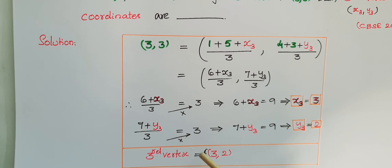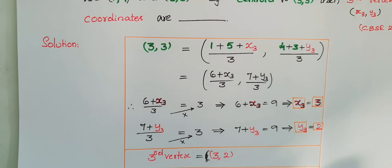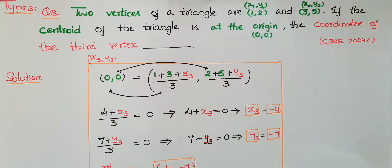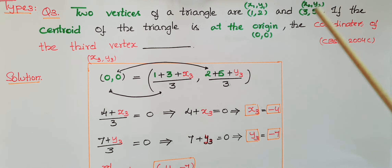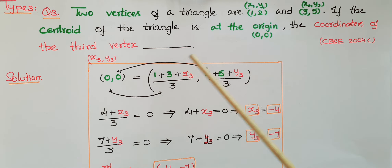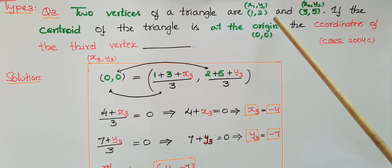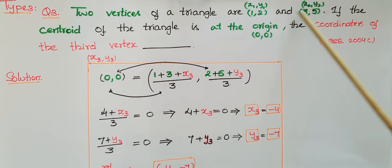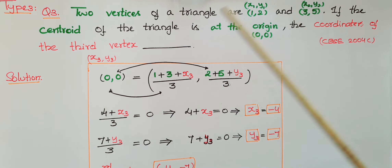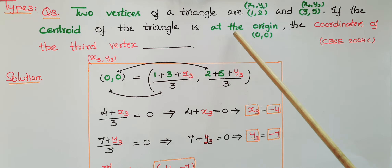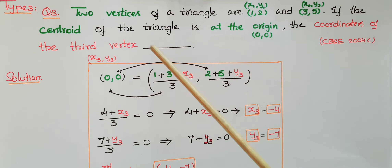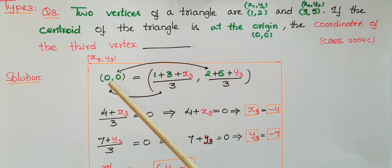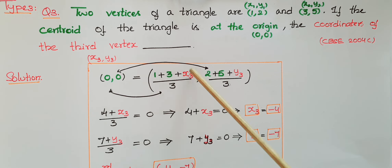This is another type of problem: two vertices of a triangle are (1, 2) and (3, 5). If the centroid of the triangle is at the origin, find the coordinates of the third vertex. Here two vertices (x1, y1) = (1, 2) and (x2, y2) = (3, 5) are given, and the centroid is at the origin, meaning centroid coordinates are (0, 0). We have to find the third vertex coordinates.